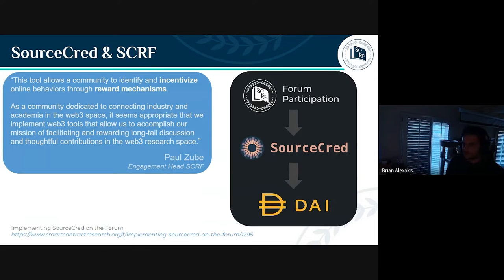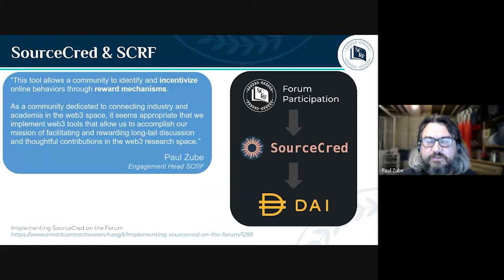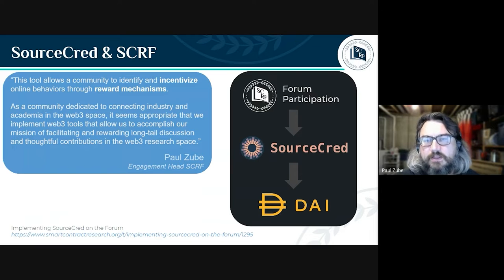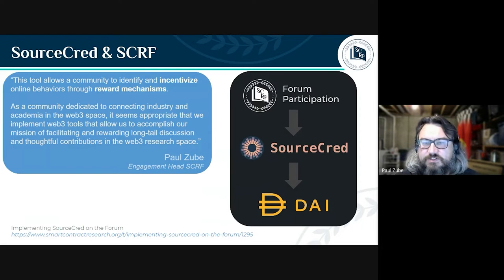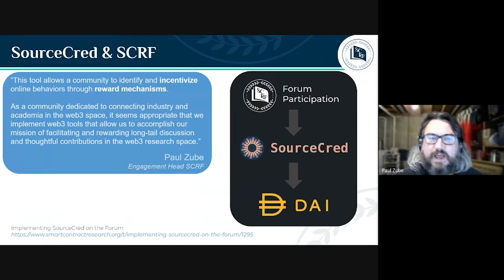Those in the meeting have probably heard this pitch many times, but for those watching at home on YouTube: SourceCred, or Scurf's implementation of SourceCred, is our ongoing experiment in using a tool called SourceCred — an open-source tool that does an algorithmic ranking of participation and value addition to discussion, particularly on our forum. This guild is formed to govern what happens there and pay attention to how this experiment is going for Scurf.